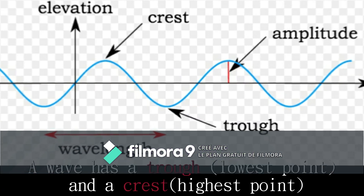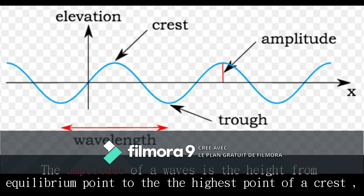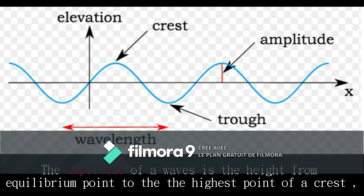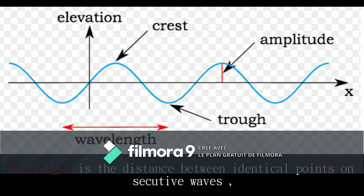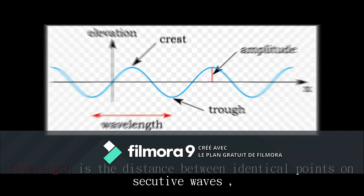As we all know, a wave has a trough and a crest. The amplitude of a wave is the height from the equilibrium point to the highest point of a crest. Wavelength is the distance between identical points on successive waves.